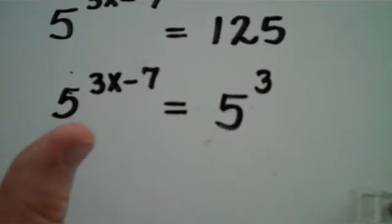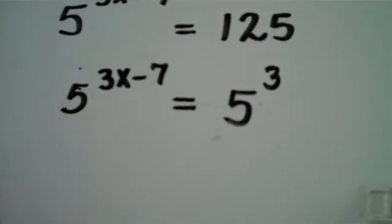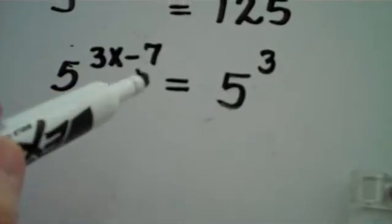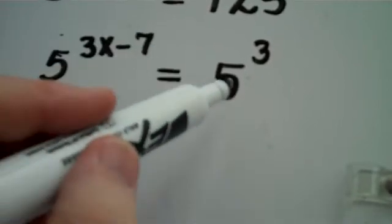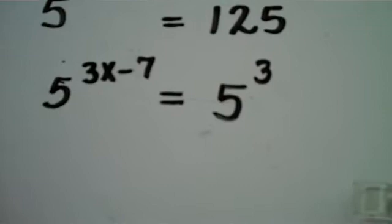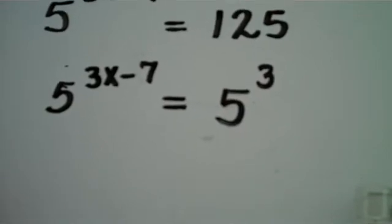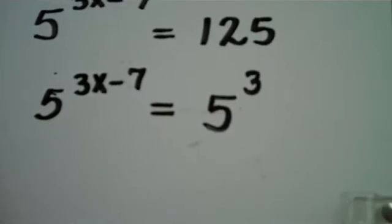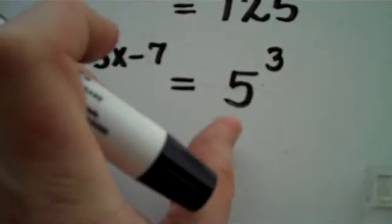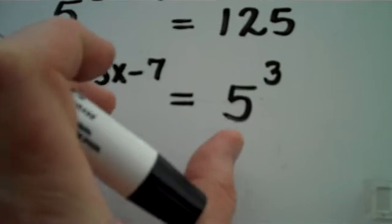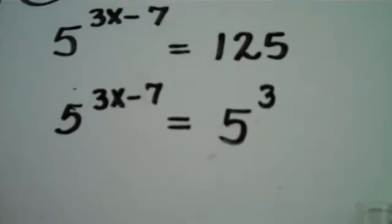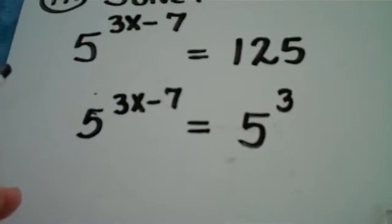So on the very next line what you do is you set the exponents equal to each other. Now, one fact that I do need to mention to be mathematically precise. What's really happening here, 5 to a power, 5 to a power. If you thought about the exponential function f of x equals 5 to the x power, that function is a one-to-one function. And the only way two results of that function can be the same is if the two inputs were the same. So basically it's the one-to-oneness that's allowing us to do this.